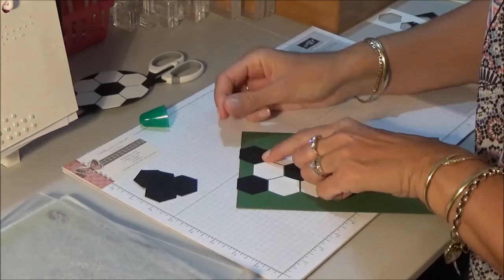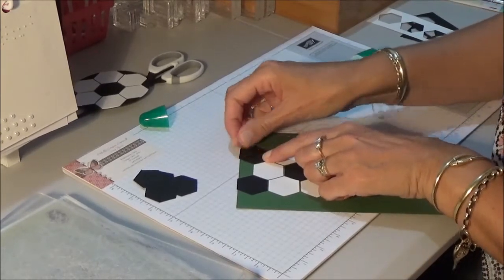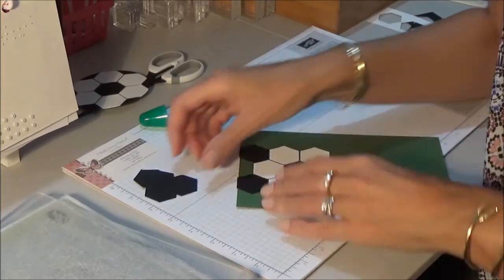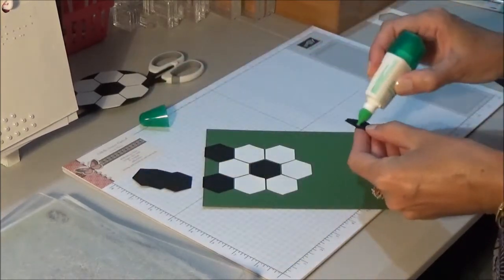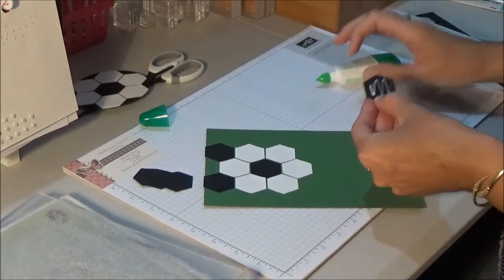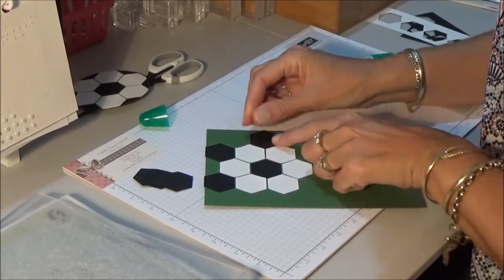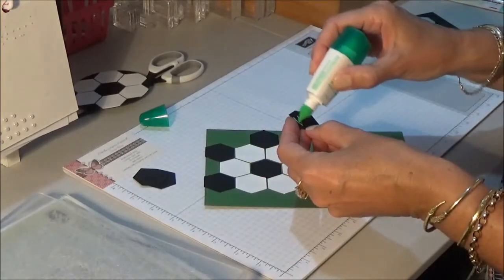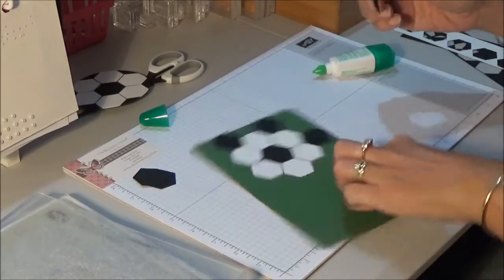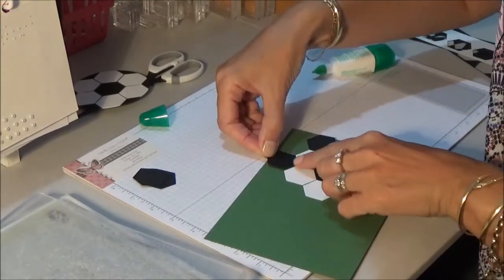Again, just check that gap. Hold it in position, push that down. You're going to do one on that side there. And you'll pop another one on the other side, just in here.